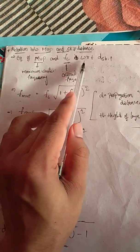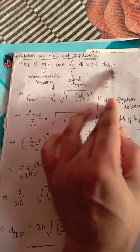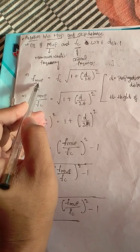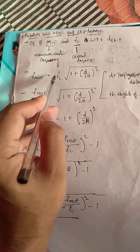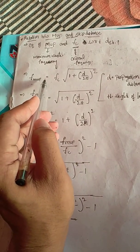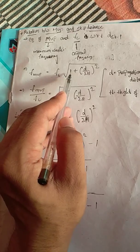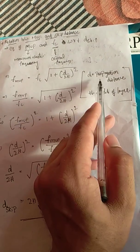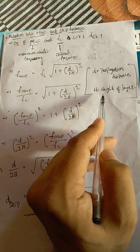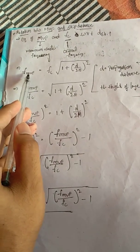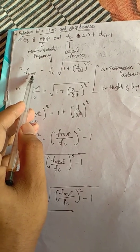The equation relating MUF and fc, the critical frequency, with respect to skip distance is: the Maximum Usable Frequency equals fc times the square root of (1 plus (D/2H) squared), where D is the propagation distance and H is the height of the layer.